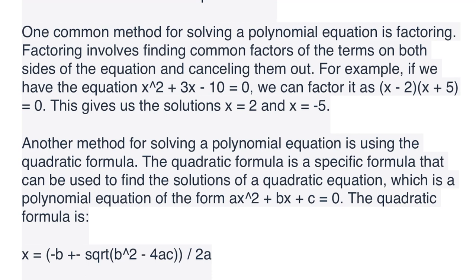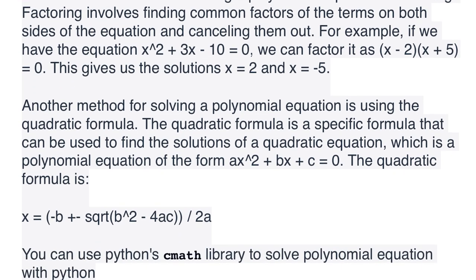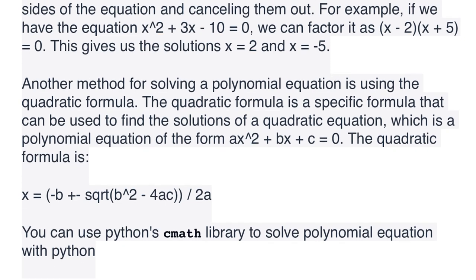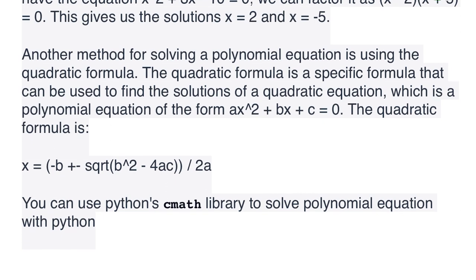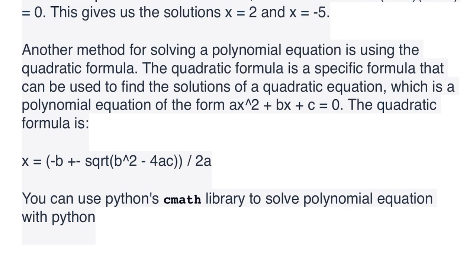One common method for solving a polynomial equation is factoring. Factoring involves finding common factors of the terms on both sides of the equation and cancelling them out. For example, if we have the equation x^2 + 3x - 10 = 0, we can factor it as (x - 2)(x + 5) = 0. This gives us the solutions x = 2 and x = -5.